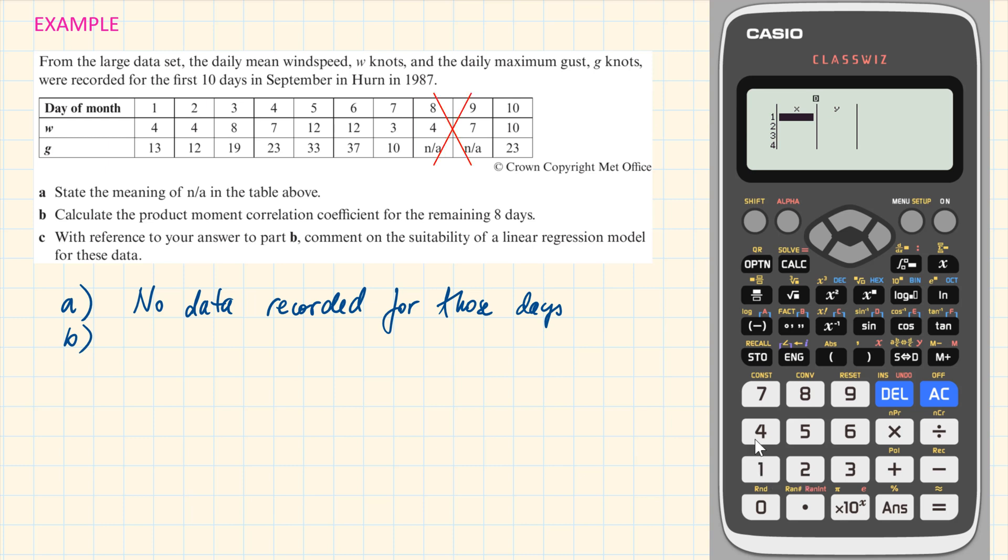There is missing data for the days 8 and 9, so we're going to skip these values. When you've got all the values entered, press the option button on your calculator. And here we are going to choose number 4, regression calculator.